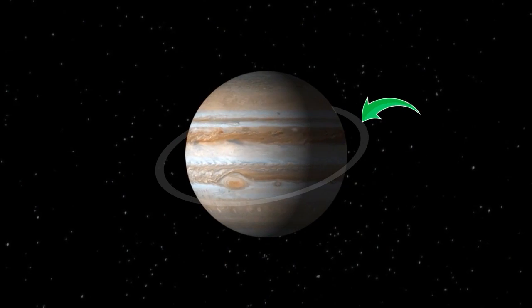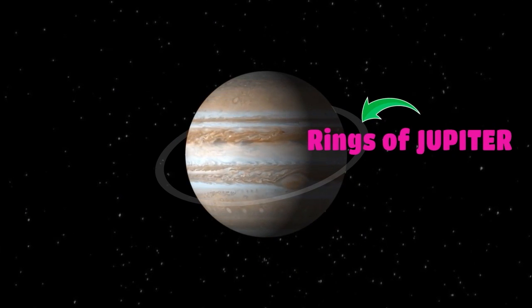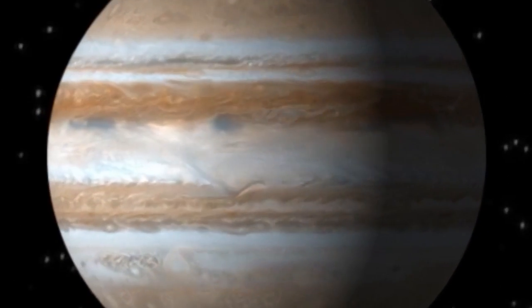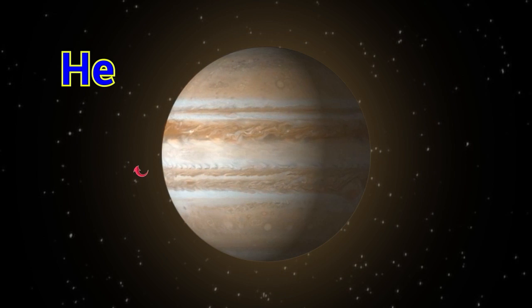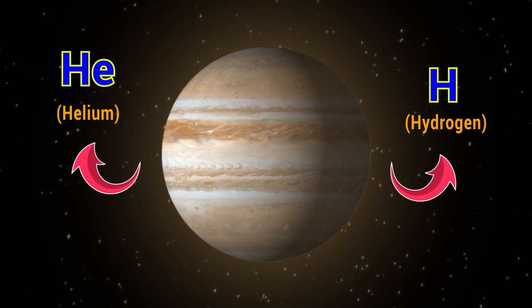Jupiter has a system of rings, but they are much fainter than the rings of Saturn. It does not have a solid surface. Jupiter has a thick atmosphere composed mainly of hydrogen and helium, with trace amounts of other gases.